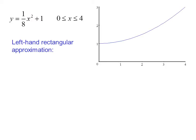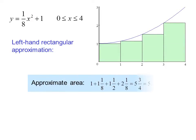The left-hand rectangular approximation gives us an approximate area of 1 plus 1 and 1/8 plus 1 and 1/2 plus 2 and 1/8 equals 5 and 3/4, or 5.75. This is too low, and we can see by looking at the picture why it's too low.